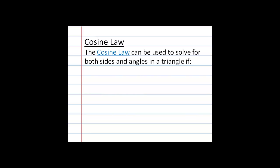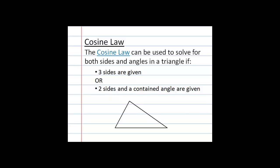In this video we're going to look at the cosine law. The cosine law is used if I want to solve for either a side or an angle in a triangle if one of two cases exists: if I have three given sides, or if I have two sides and a contained angle, I can use the cosine law to solve for a missing side length or a missing measure of an angle.